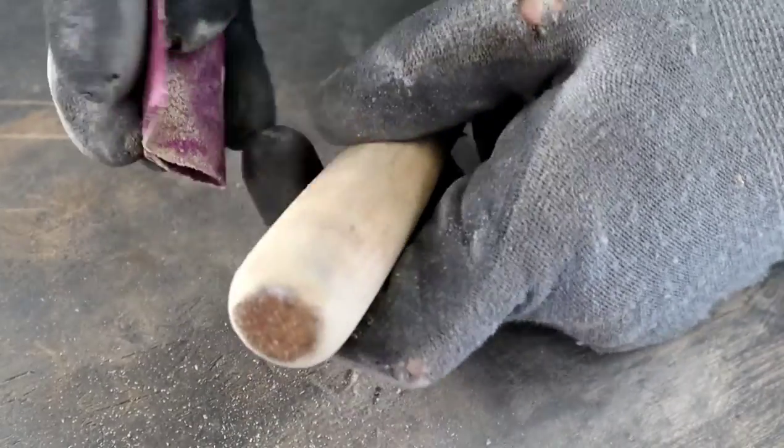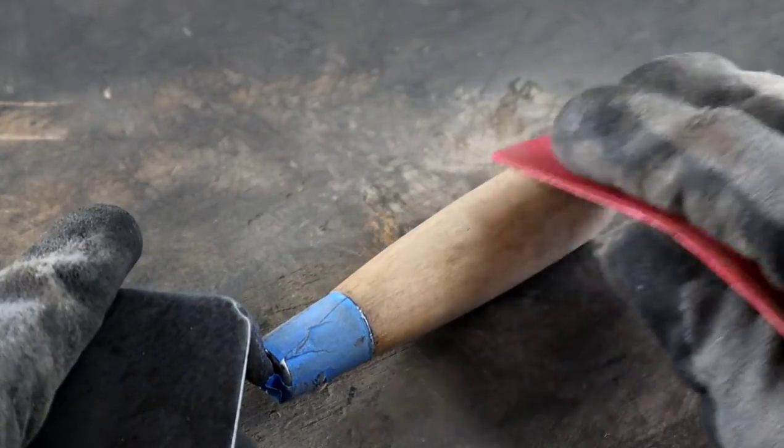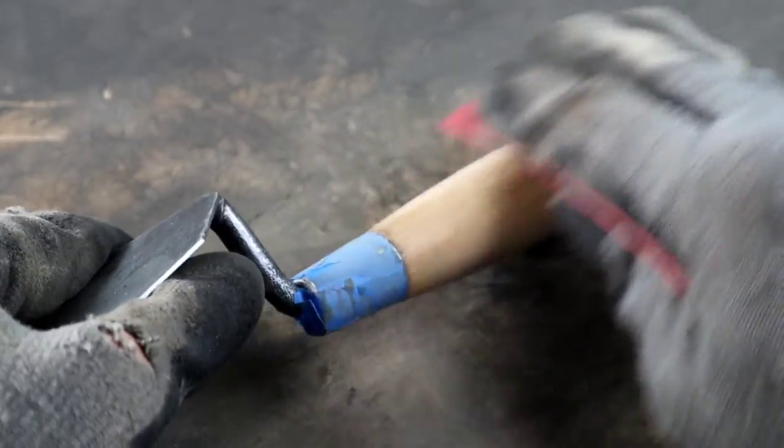Make sure you look carefully at the wood direction on the end of the handle and sand in the direction of the grain there too. Once the top layer is off, hit the handle with a 220 to leave a soft finish that's going to feel great to hold.